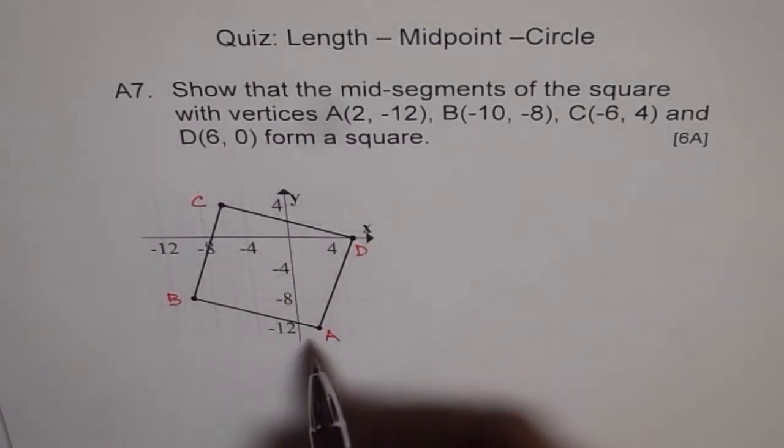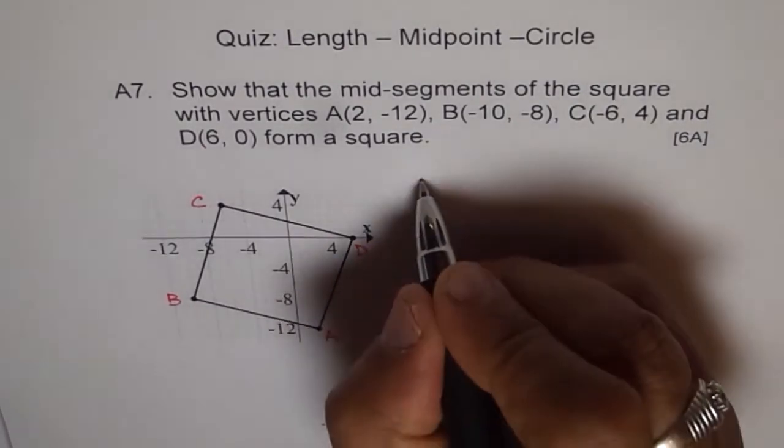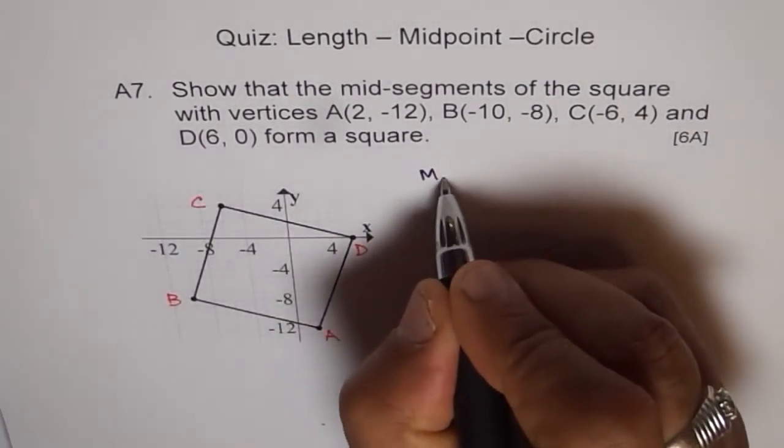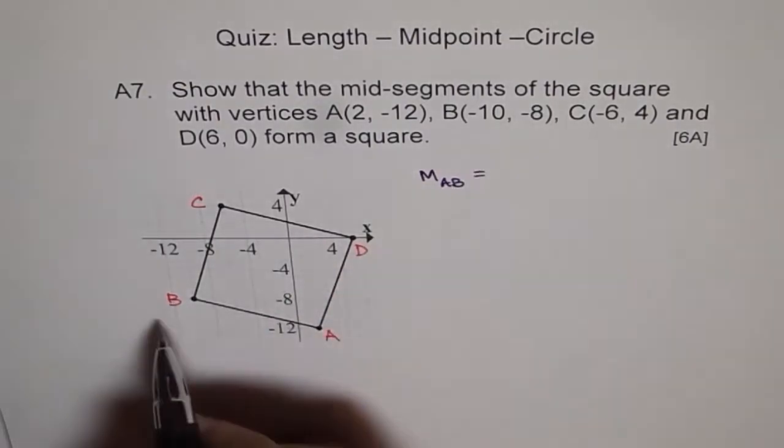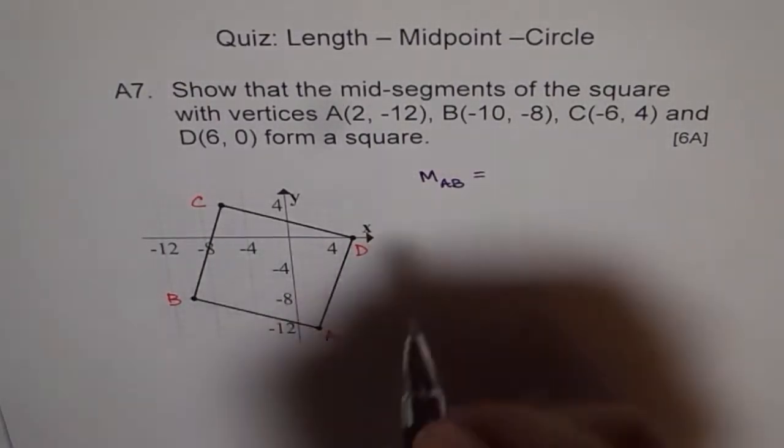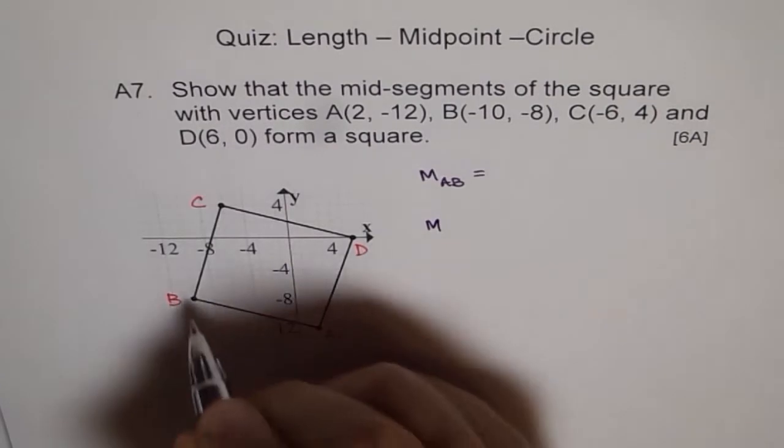Midpoint of - we can start from many sides, say AB. So first find midpoint of AB. You can add x and x, y, that is one. Then find midpoint of BC,